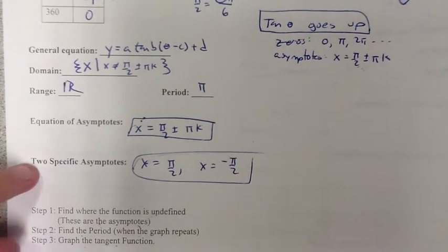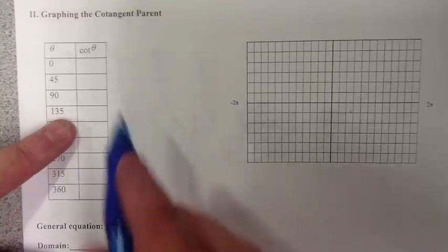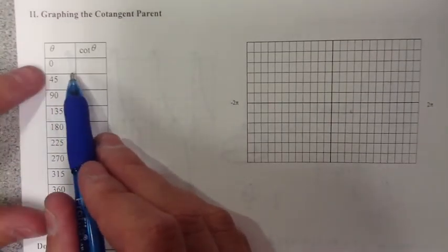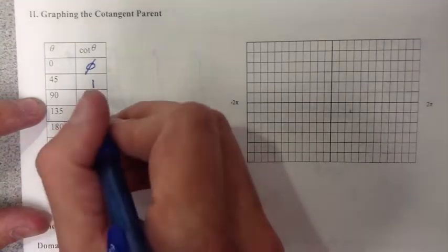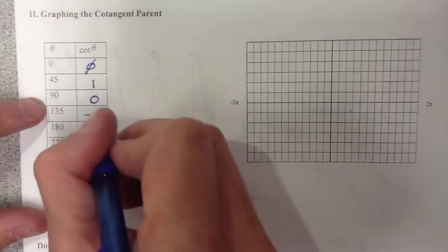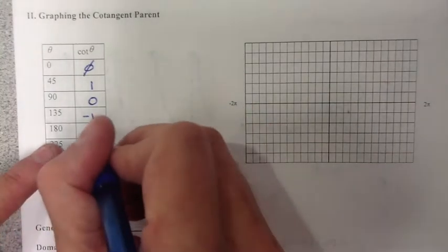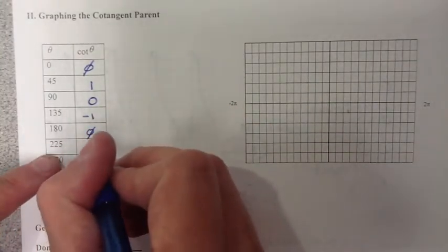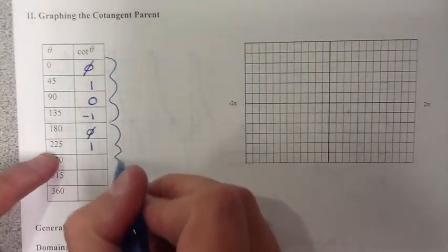Cotangent is very similar, if we take a look at it. But the difference is where our undefines are. Cotangent is undefined at 0, still 1 at 45 degrees, and at 90 degrees it equals 0. At 135 it's negative 1, and at 180 degrees it's going to be undefined again.